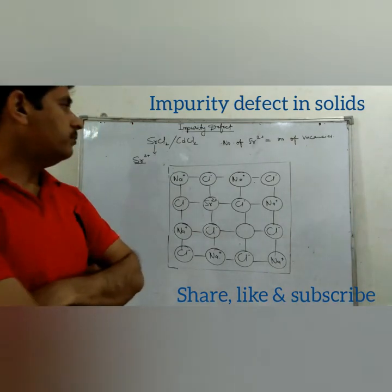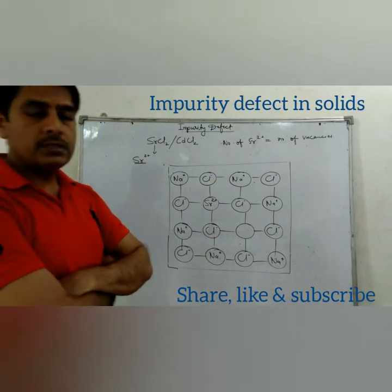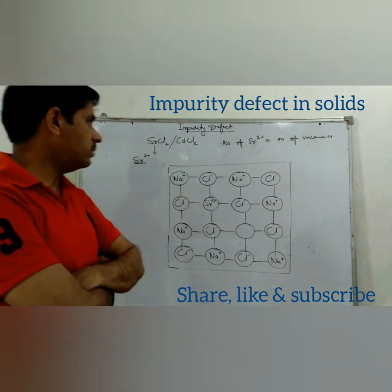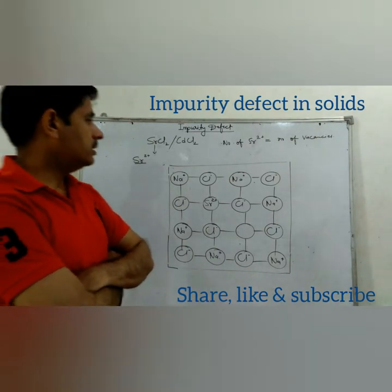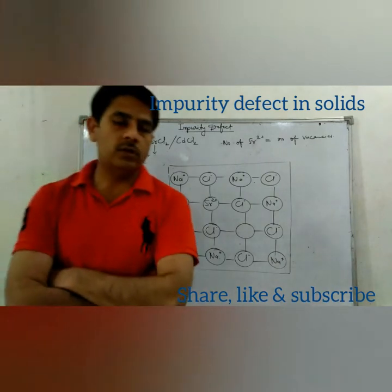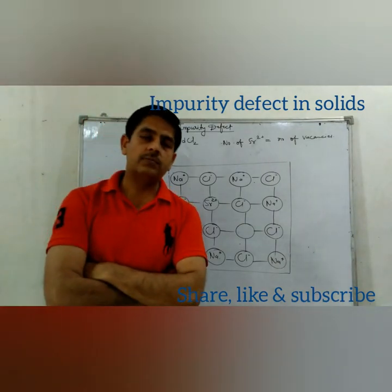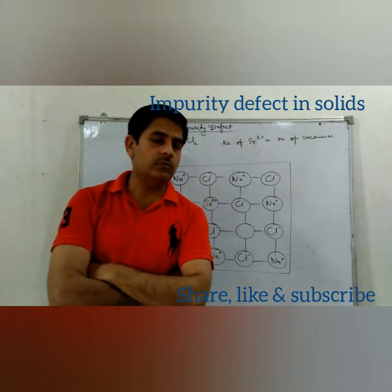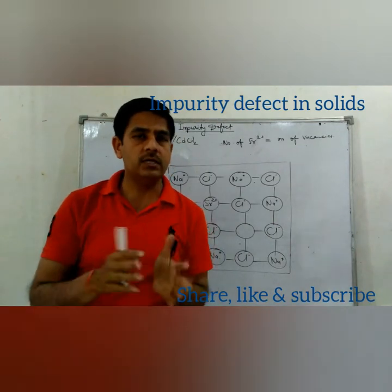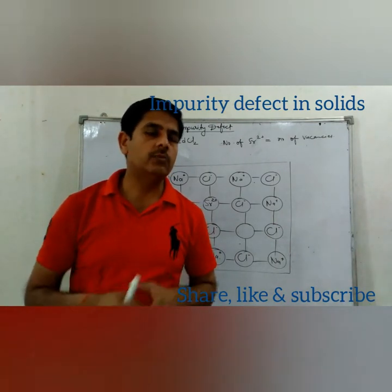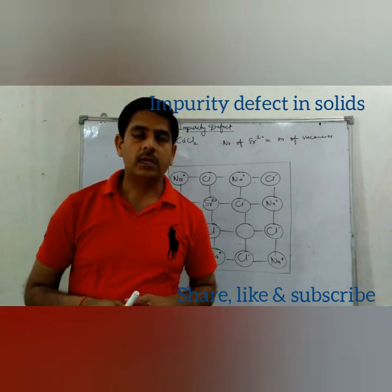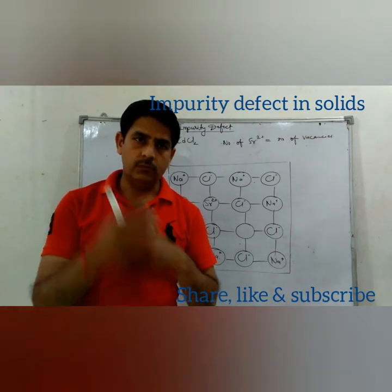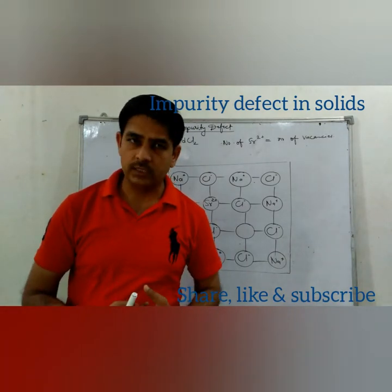It is very clear how impurity defect is created. One thing you have to remember: to calculate how many vacancies are present due to impurity defect, you simply find the number of Sr²⁺ ions present in the impurity — the number of Sr²⁺ ions equals the number of vacancies.